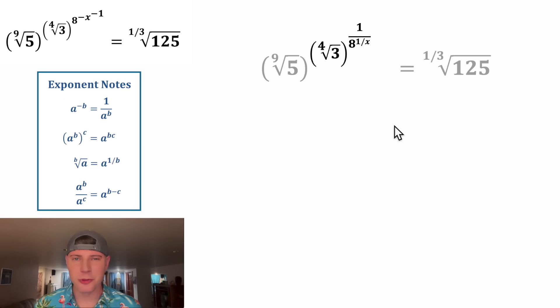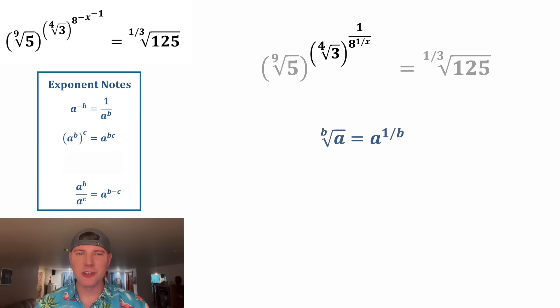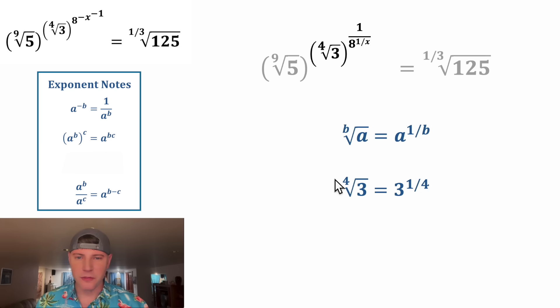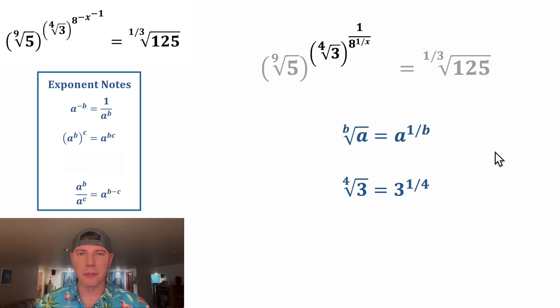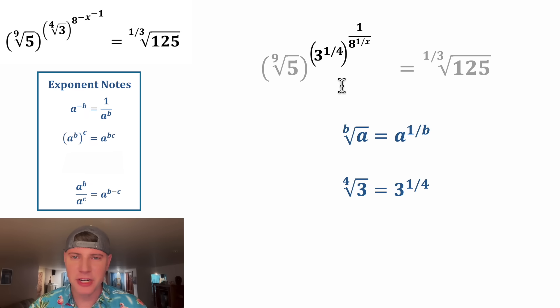Next we can look at the fourth root of three, which will use these rules. The fourth root of three will equal three to the one-fourth power, so we can change this inside here into three to the one-fourth power.